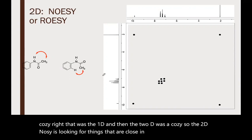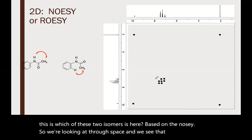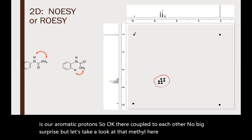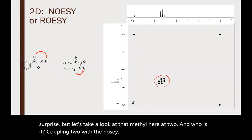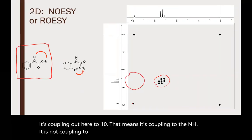The question is which of these two isomers is here based on the NOESY. We're looking through space and we see the aromatic protons are coupled to each other, no big surprise. But let's look at that methyl here at 2 ppm and who is it coupling to with the NOESY? It's coupling out here to 10 ppm, meaning it's coupling to the NH. It is not coupling to anything here, which you would expect for this isomer because those two are pointing to each other.